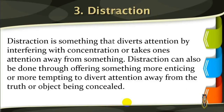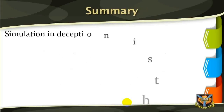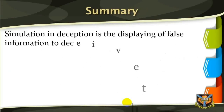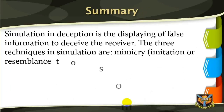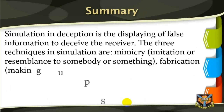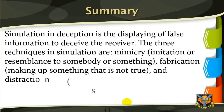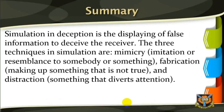Simulation in deception is the displaying of false information to deceive the receiver. The three techniques in simulation are mimicry — imitation or resemblance to somebody or something — fabrication, making up something that is not true, and finally, distraction, something that diverts attention. End of Study Session 7. Thank you for listening.